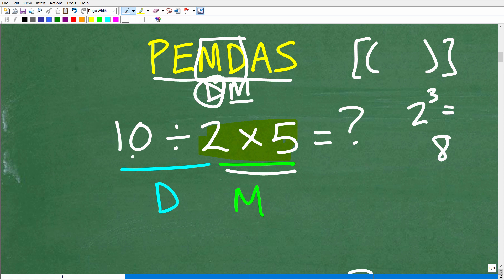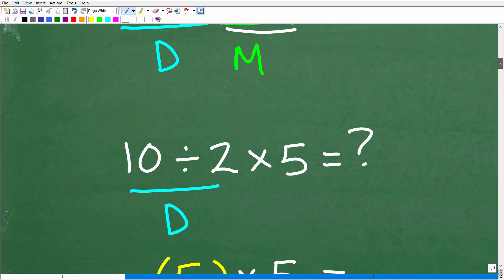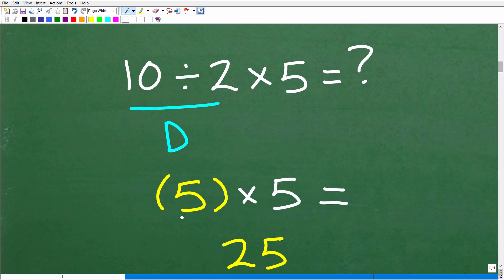So 10 divided by 2 is going to be what? Well, 10 divided by 2 is going to be 5. And then, of course, that is the answer, 10 divided by 2. And then we have to finish up by multiplying by 5. So 5 times 5 is 25.